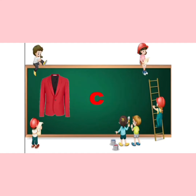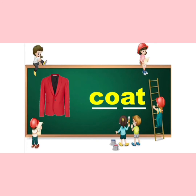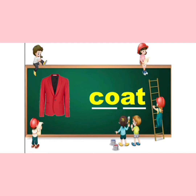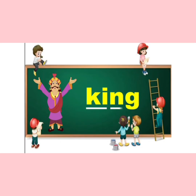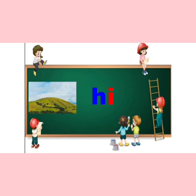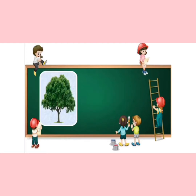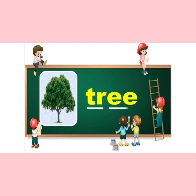Coat: C-O-A-T. King: K-I-N-G. Hill: H-I-L-L. Tree: T-R-E-E.